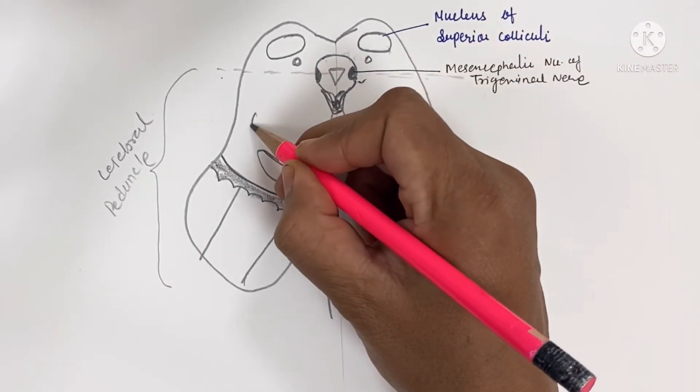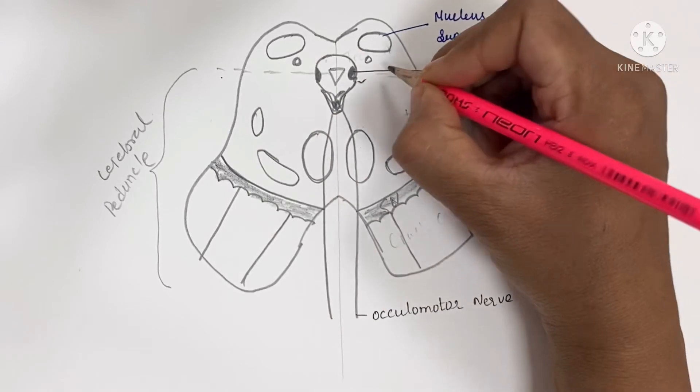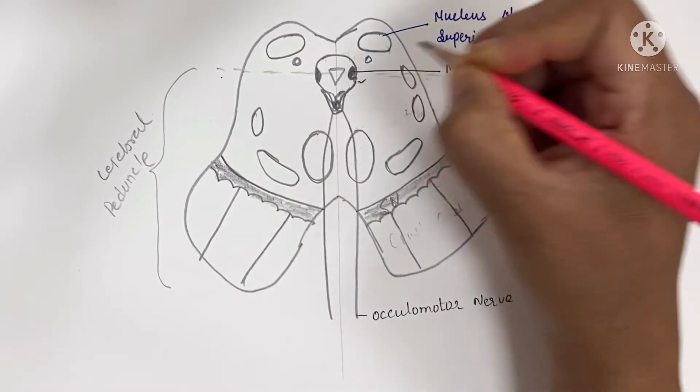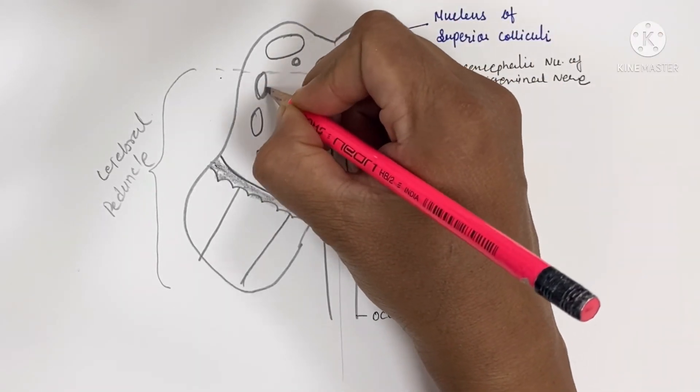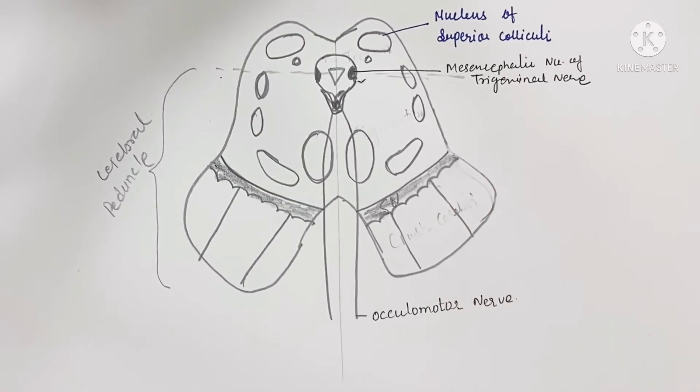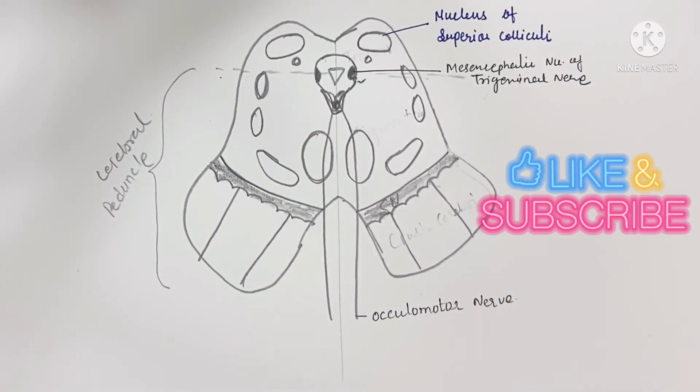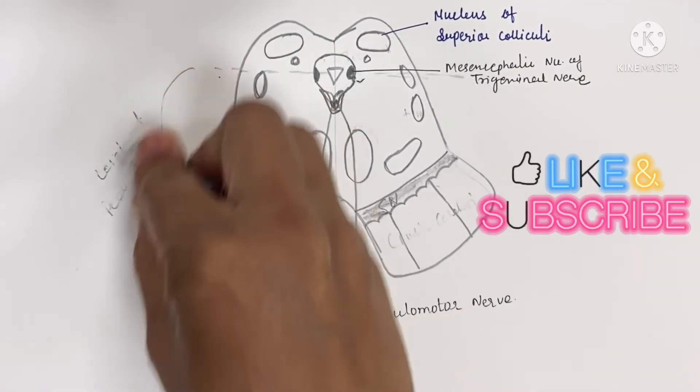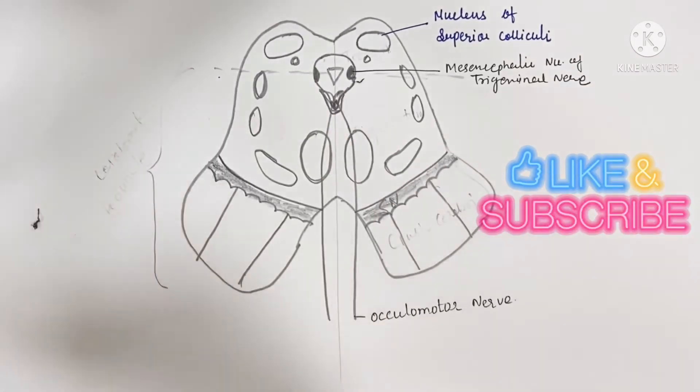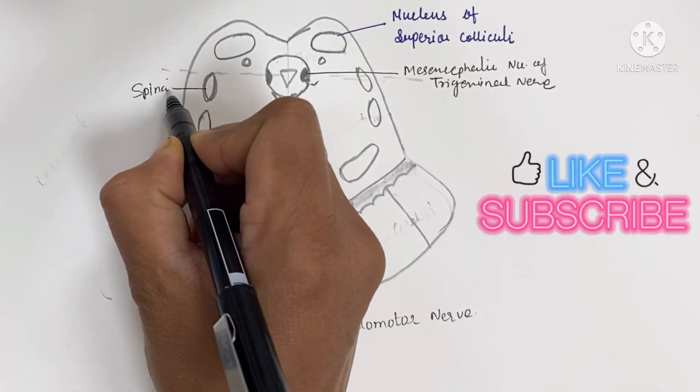The ventral and lateral part of the tegmentum contains, from medial to lateral, the medial lemniscus, trigeminal lemniscus, and spinal lemniscus.